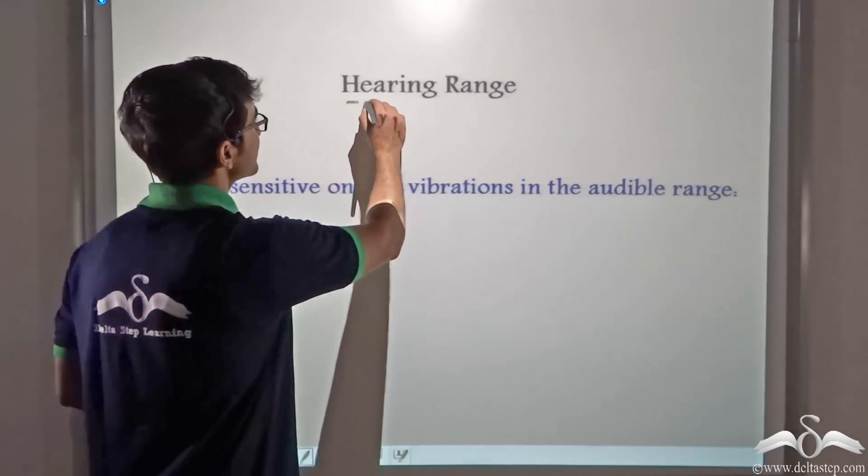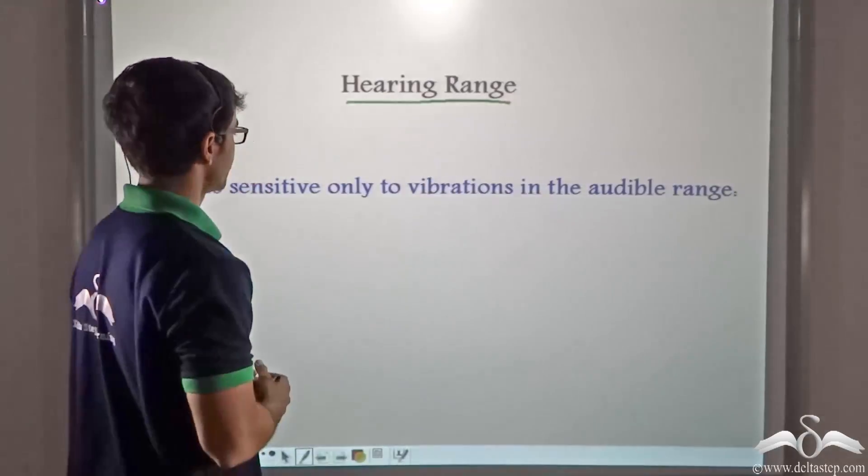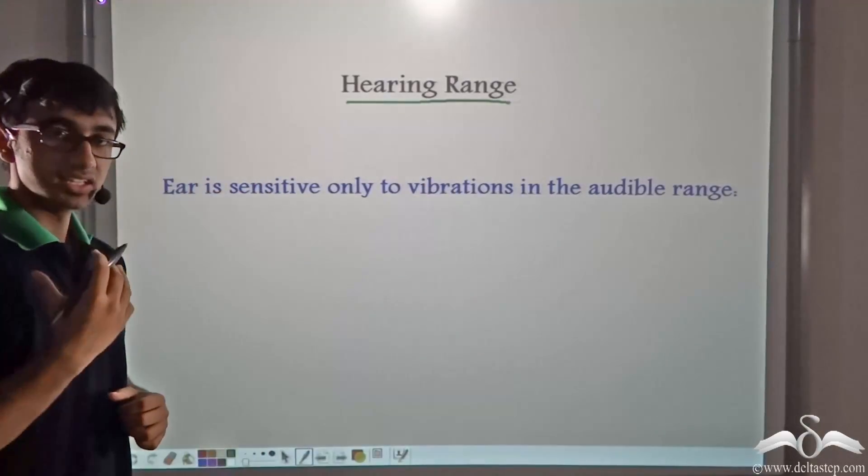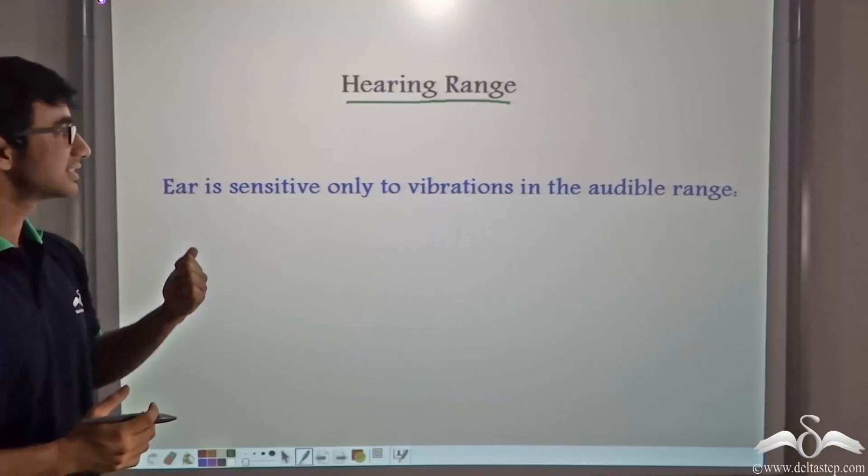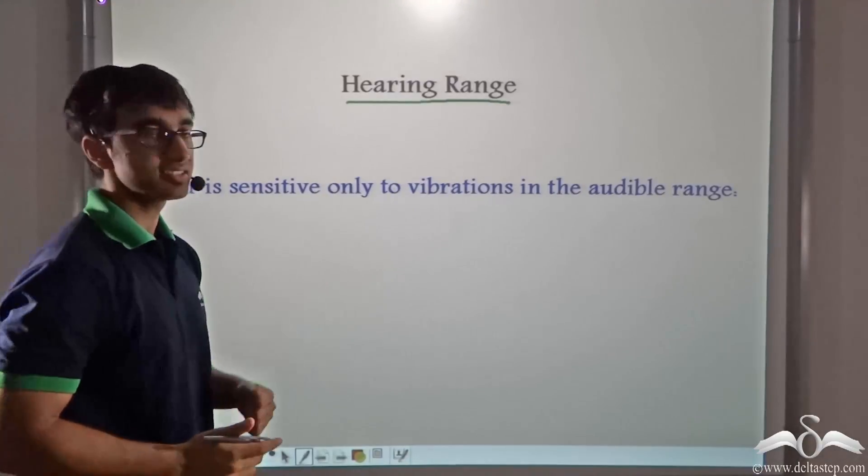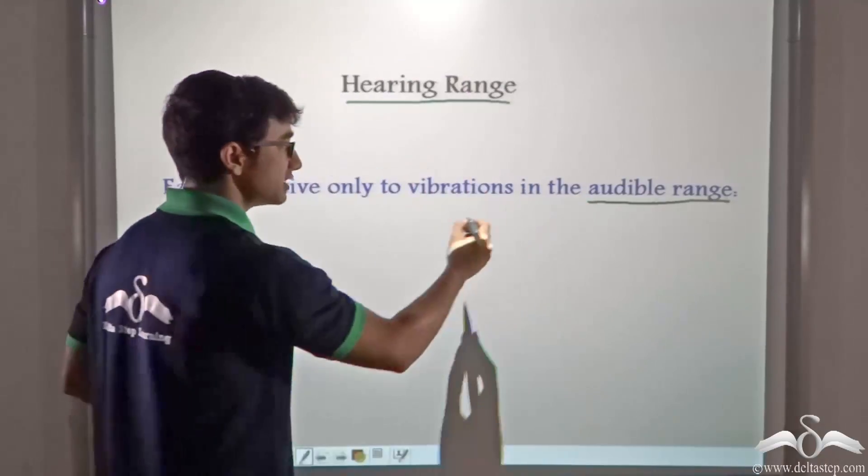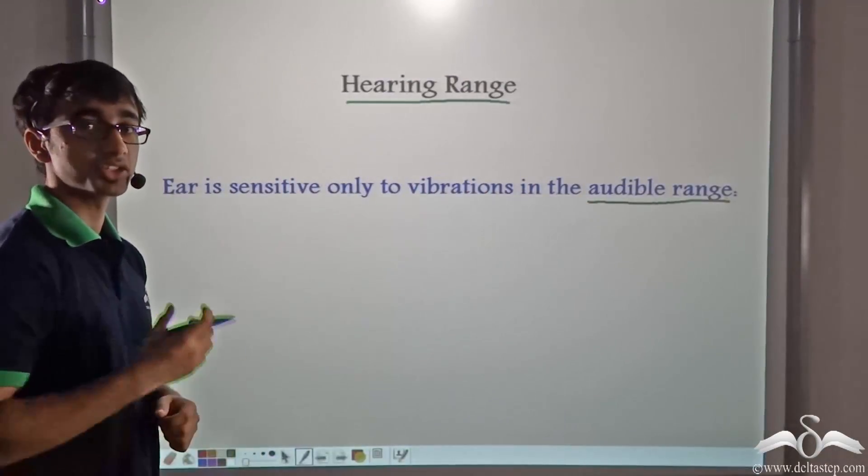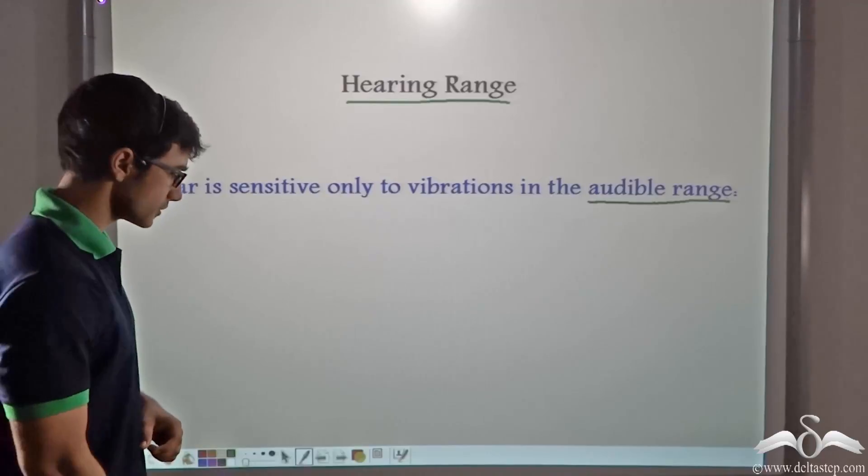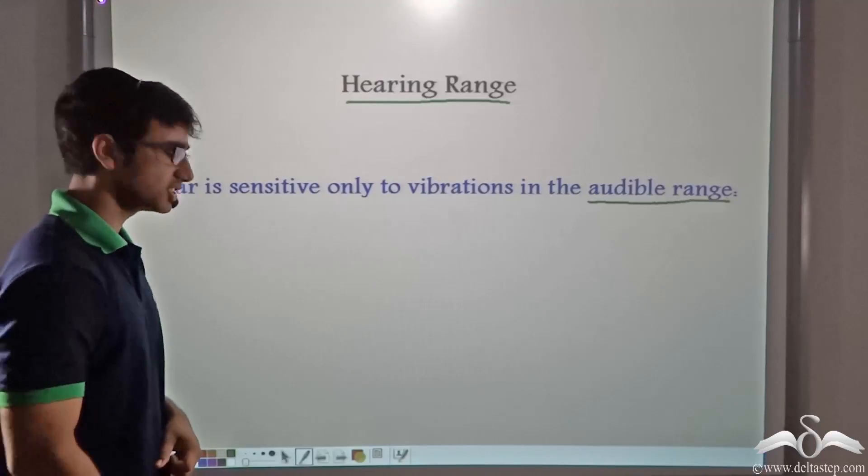So what do you think which frequencies can we hear the sounds at? So what is the hearing range for us human beings? The ear, that is the human ear, is sensitive only to vibrations in the audible range. The audible range is that range of sound frequencies that the human ear can perceive.